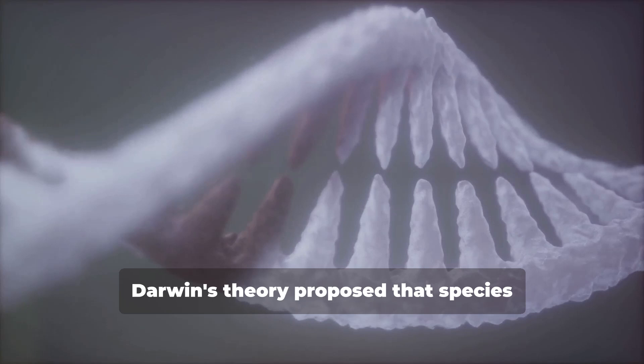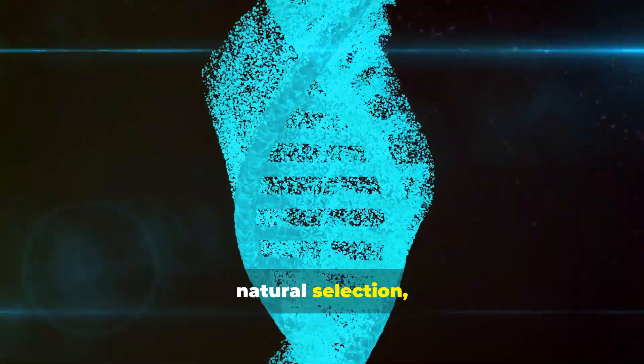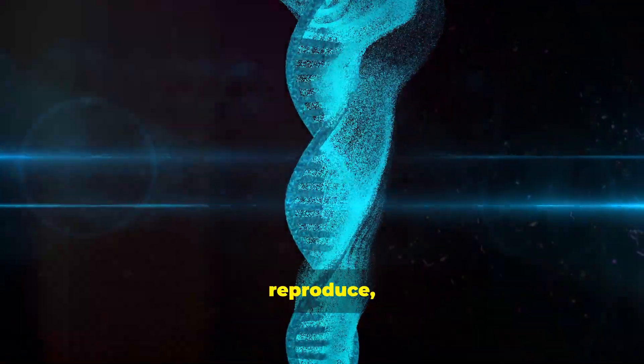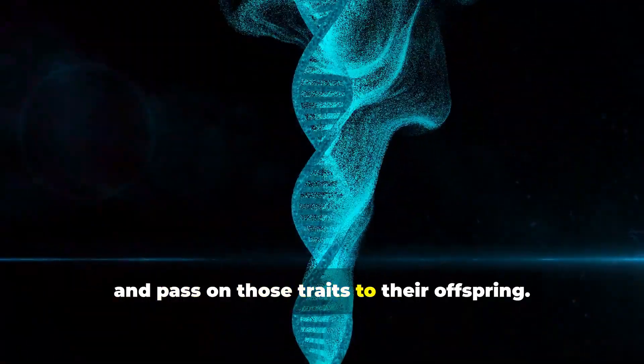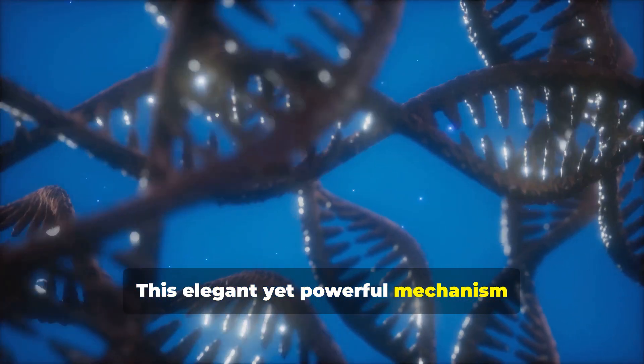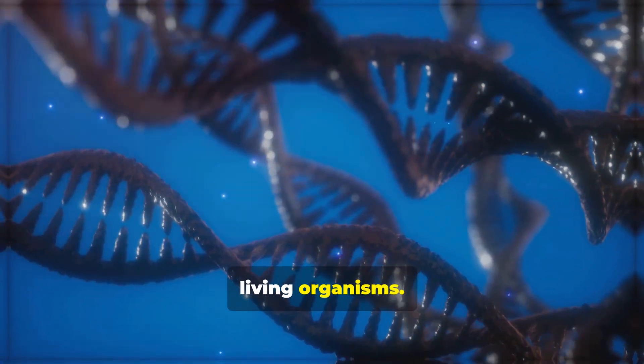Darwin's theory proposed that species evolve over time through a process of natural selection, where individuals with traits better suited to their environment are more likely to survive, reproduce and pass on those traits to their offspring. This elegant yet powerful mechanism revolutionized our understanding of life's history and the interconnectedness of all living organisms.